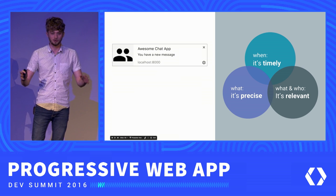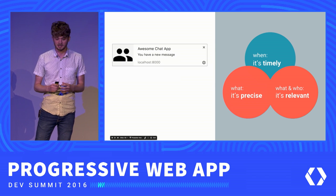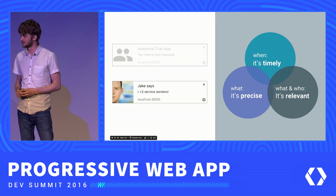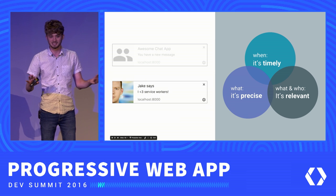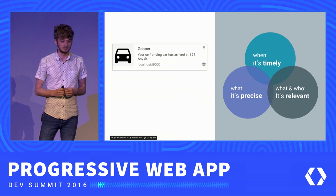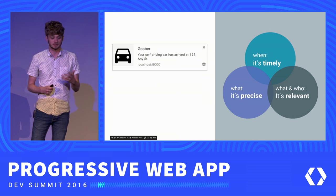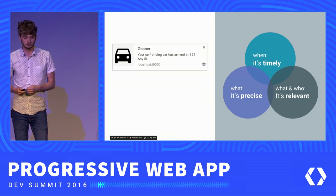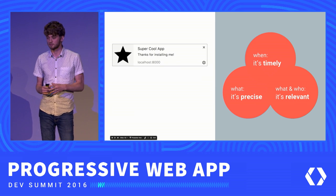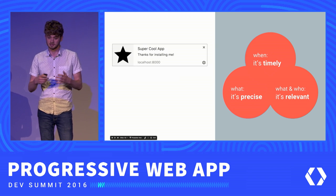How about this one — 'Awesome Chat App: you have a new message.' Awesome Chat App, your notifications are not so awesome. It's probably timely, but it's certainly not precise, and who can say if it's relevant? Redesigned, we get 'Jake says: I heart service workers.' And then here's probably the worst possible example — it's none of the above. The risk is that if you send notifications that don't provide value, that distract or spam users, they're going to turn off notifications and you'll lose that interaction capability in the future.